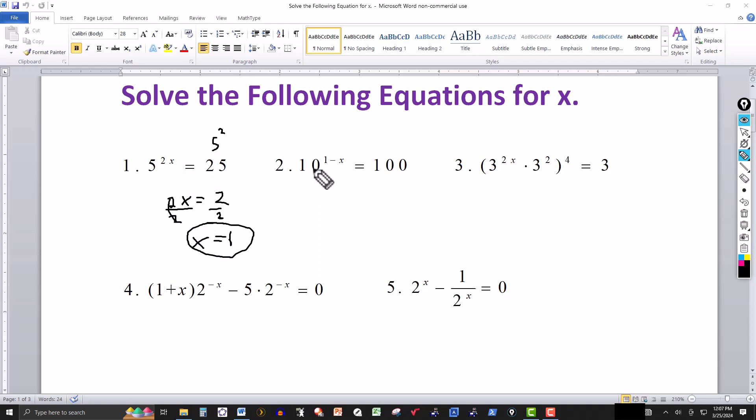In the second one, 10 to the power of 1 minus x equal to 100. And we can write again the 100 as 10 squared. Now we have the same base, we can equate the exponents.